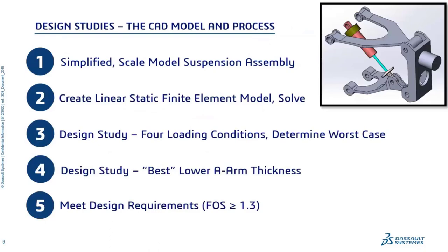This CAD model comes from a SOLIDWORKS simulation training course — it's a scaled model of a suspension assembly pictured in the upper right-hand corner. The CAD files have been simplified so we can work through our FEA studies faster, meaning I've removed some details, small features, and things to make them mesh and solve quickly. We've conducted some physical tests to gather the loading that acts on the knuckle of this assembly, so we're going to create a linear static finite element model and solve it based on those loads. We want that lower A-arm to meet a factor of safety of 1.3 or greater.